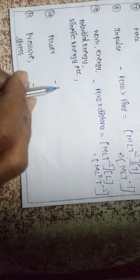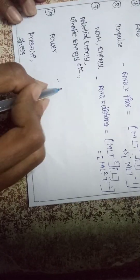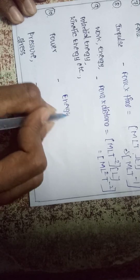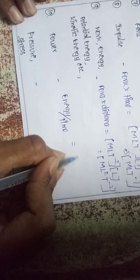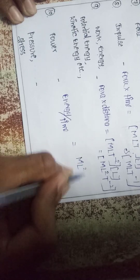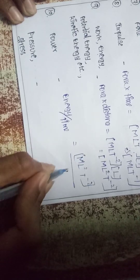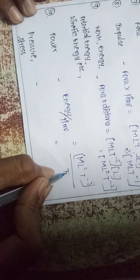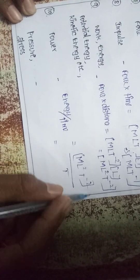Power is work by time, or energy by time. Energy is M L² T⁻², divided by T, so power is M L² T⁻³.